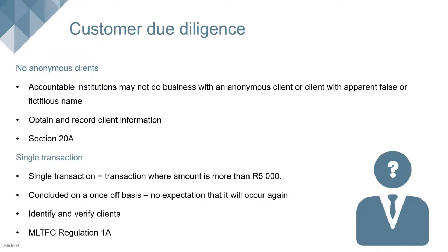Section 20A of the Financial Intelligence Centre Act states that an accountable institution may not conduct business with an anonymous client or a client with an apparent false or fictitious name. You have to have information on your client — you have to know who you are dealing with, obtain that information, and keep a record of it. The FIC Act has record-keeping requirements: once you have obtained the client information you must keep it on record for a period of five years.